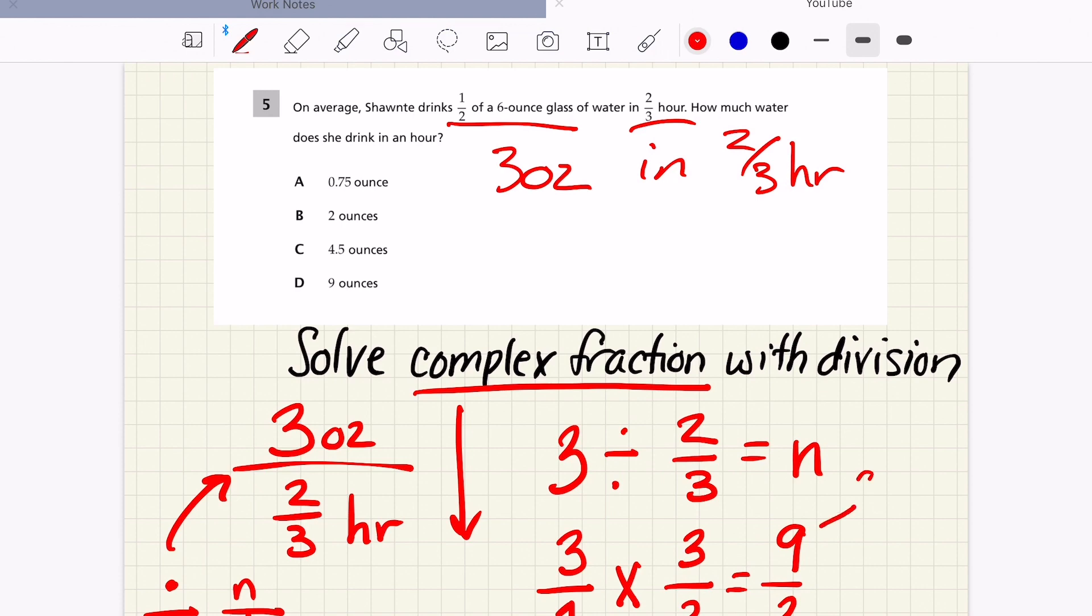This is the same as just in your head, you're doing nine divided by two. And that's the same as four and one remainder left out of two, which again, same as four and one half ounces.